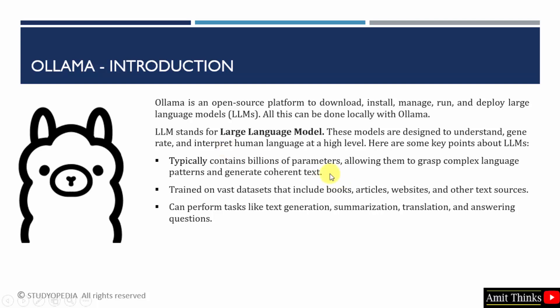Currently we have LLAMA 3.2 and Mistral 7B. These models are trained on vast datasets such as articles from the internet, books as well as other sources. When you ask a question to these LLM models on a prompt, it generates a reply.